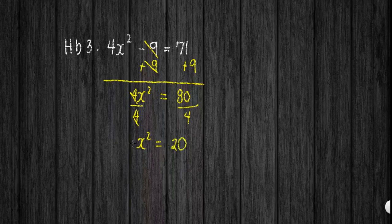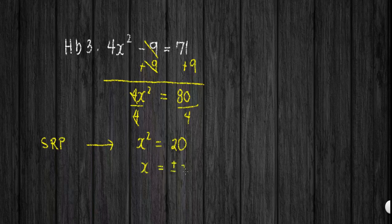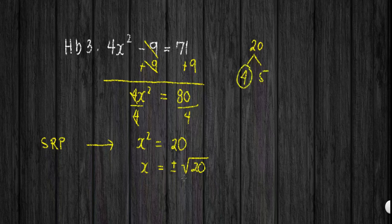Now in this given, we apply the square root principle. Since our a here is 20 and that is greater than 0, then we have x equals plus or minus square root of 20. To simplify, we find the factor of 20 that has a perfect square number, which is 4 and 5, because 4 is a perfect number. So we have plus or minus square root of 4 times 5.